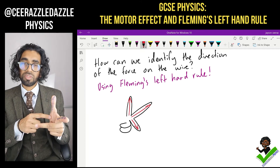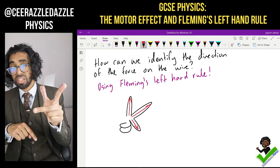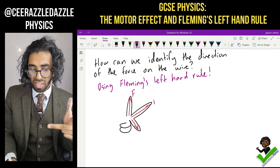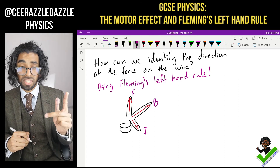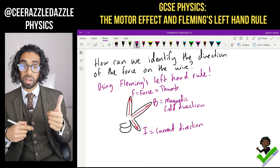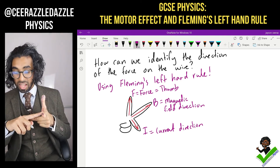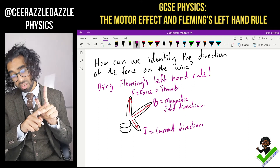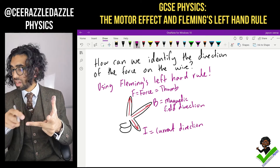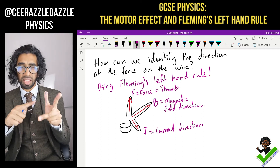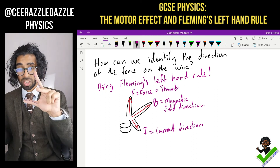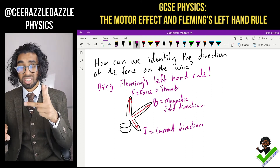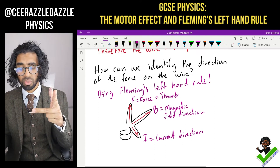Each finger tells you the direction of a quantity. We talk about it in terms of F, B, I — because you are investigating magnetism. Your thumb shows you the direction of the force F, your index finger shows you the direction of the magnetic field B, and the middle finger gives you the current direction I. Write F, B, I on your hands if it helps. They must remain perpendicular to each other.